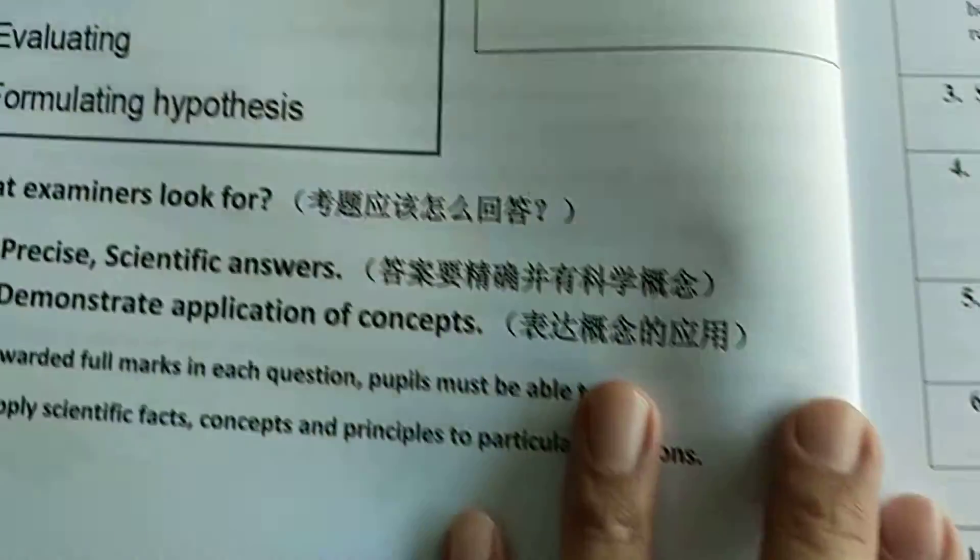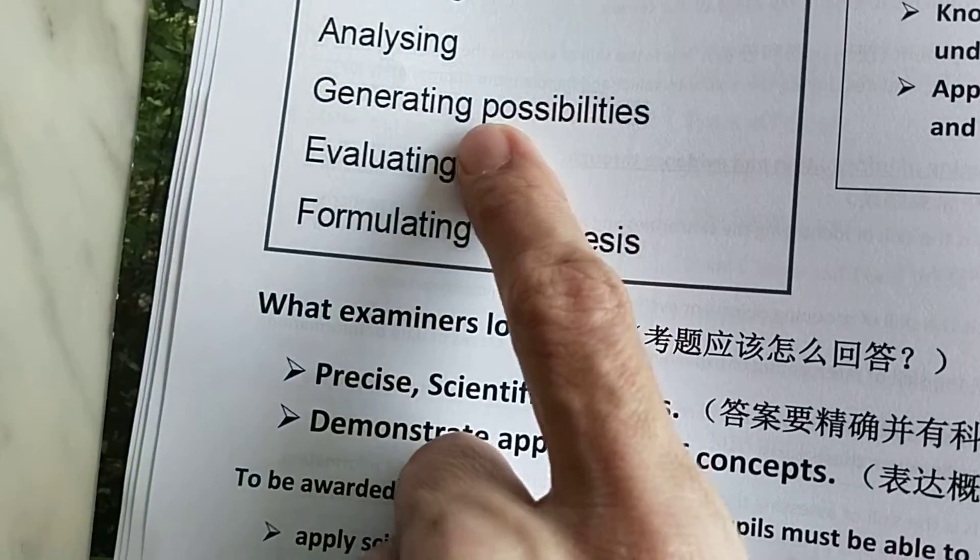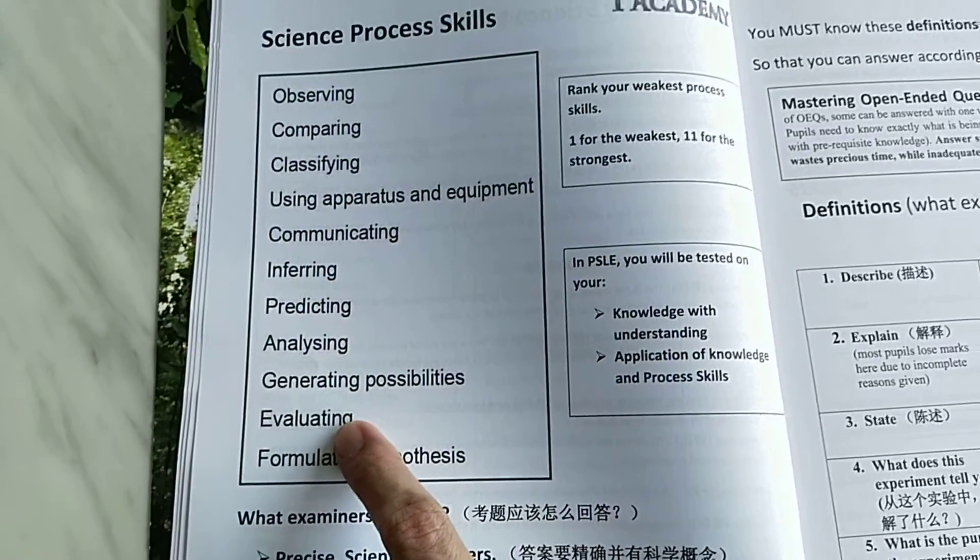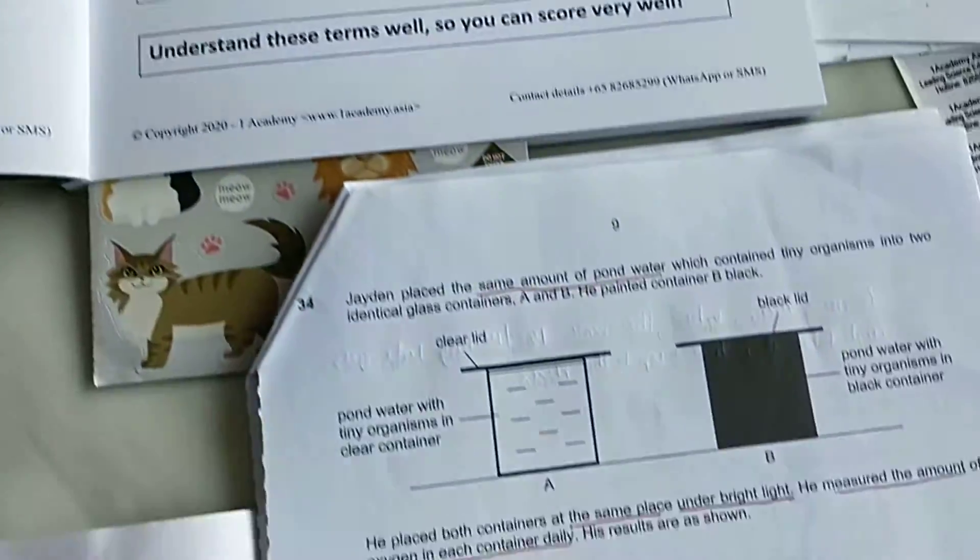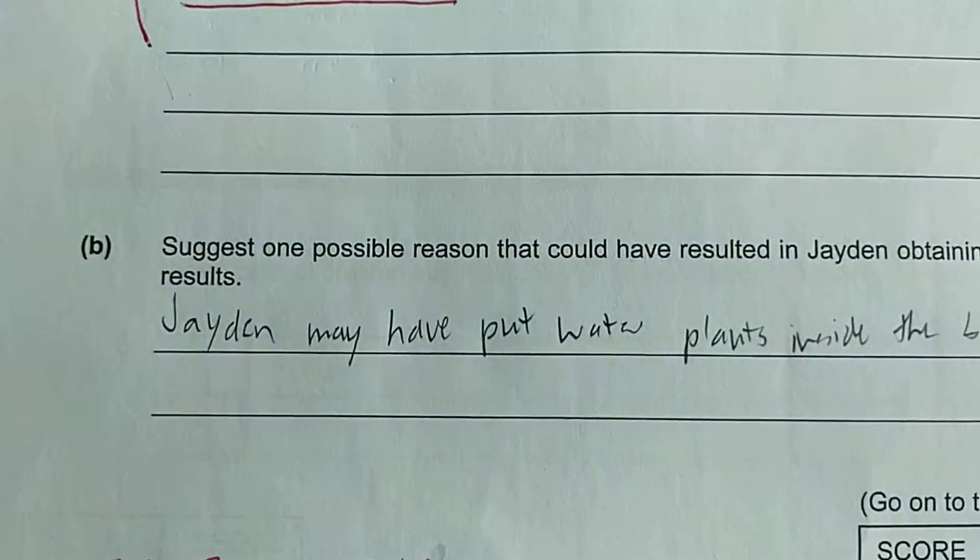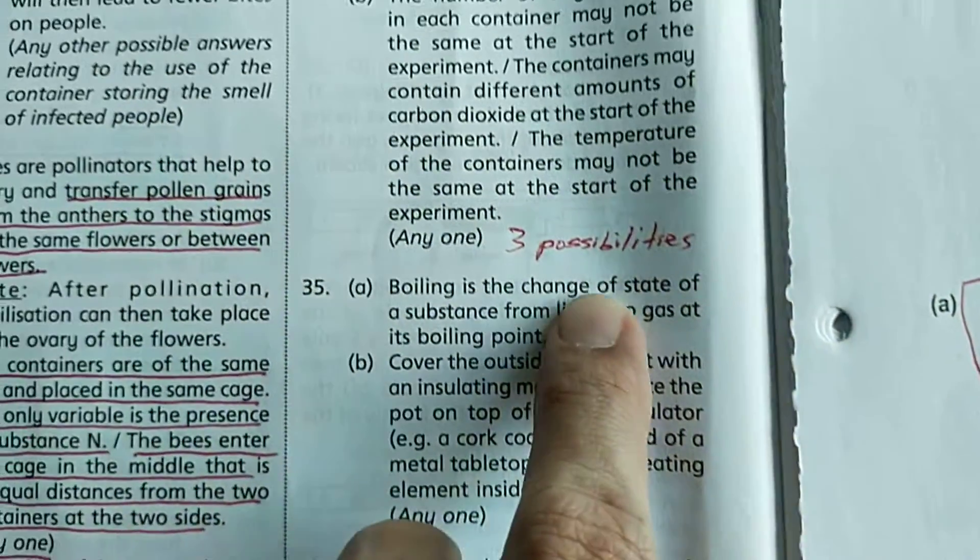This one we call generating possibility, as you can see here, is one of the processes in PSLE science. What are the possible reasons? Just give one. Actually there are three possibilities.